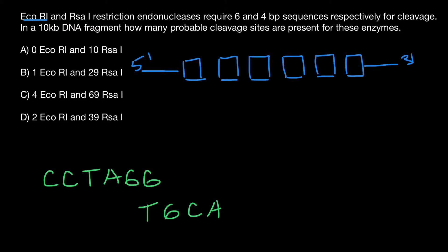So, what is the probability that if we take some random sequence along this 10,000 base pair DNA fragment, we are going to find cytosine at a given position? We have four bases to choose from, so the probability that this is going to be cytosine is one out of four — one quarter. And the probability that in the next position we again find cytosine is also one out of four.